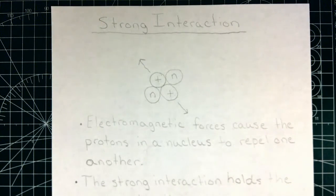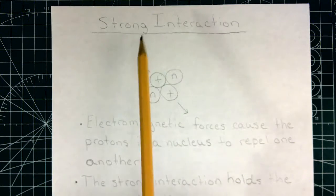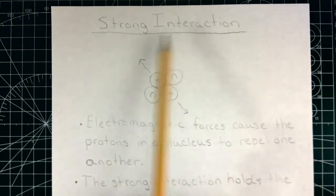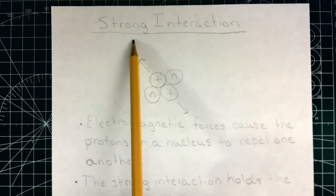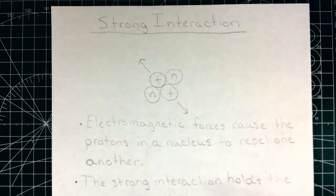Before we get into possible nuclear reactions, it's important to understand the interactions at play. There are two of them. The first is called the strong interaction, one of the four fundamental interactions of the universe. These are the strong interaction, the weak interaction we're about to speak about, gravity, and electromagnetism.